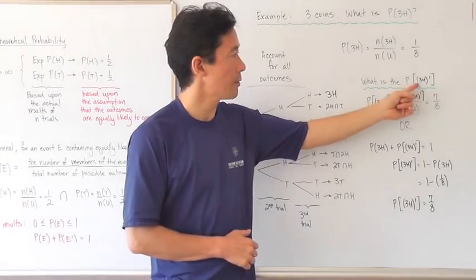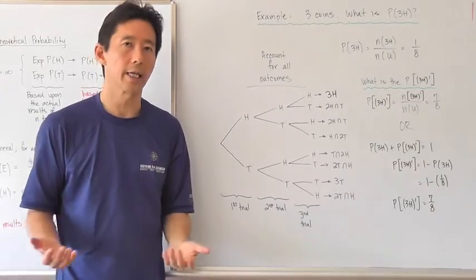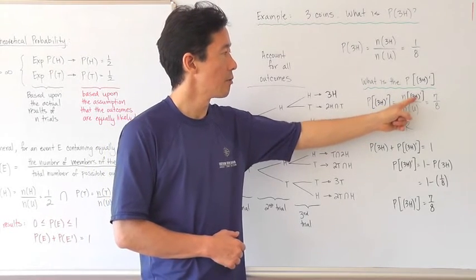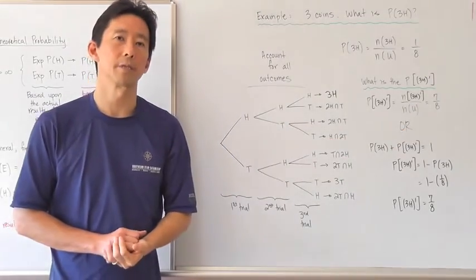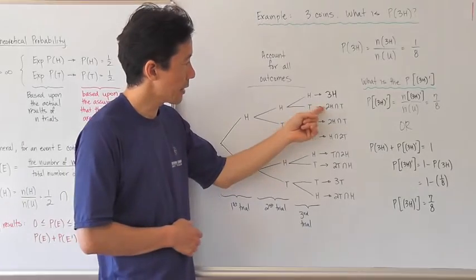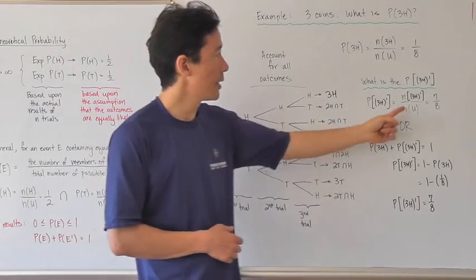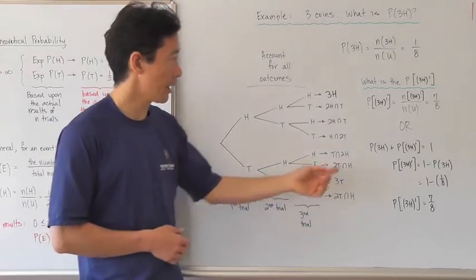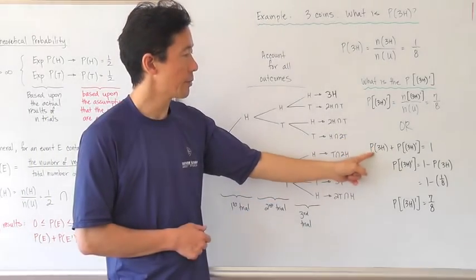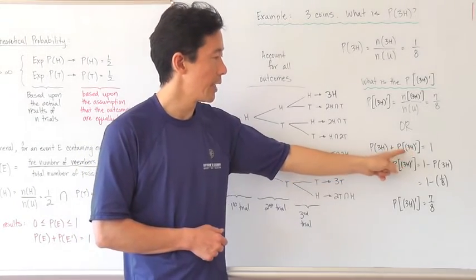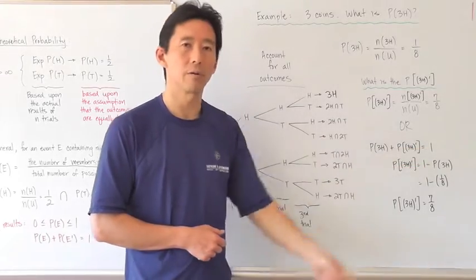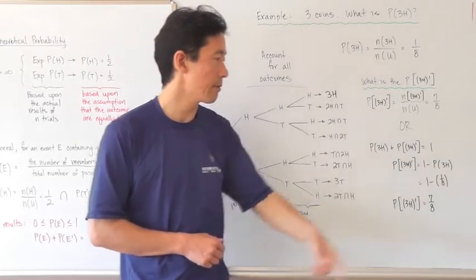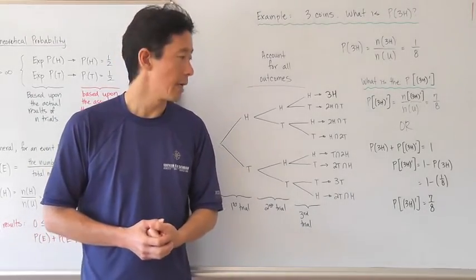What is the probability of the complementary event — not getting three heads? One approach is to count the total number of outcomes where you don't have three heads and divide by the total number of outcomes. That gives seven outcomes that are not three heads, divided by eight total outcomes, so seven over eight. Alternatively, since the probability of getting three heads plus the probability of not getting three heads equals one, the probability of not getting three heads equals one minus one eighth, which is also seven over eight.